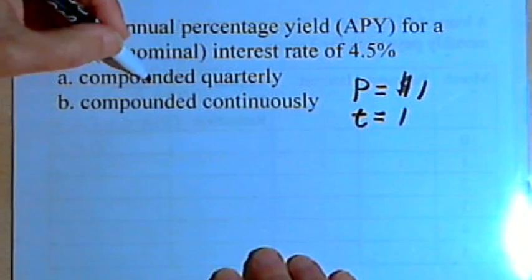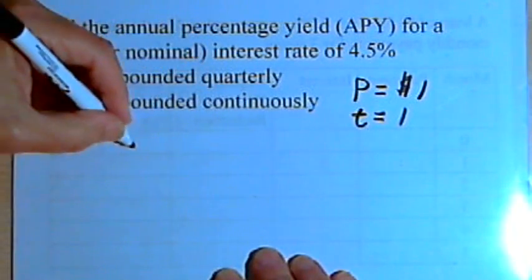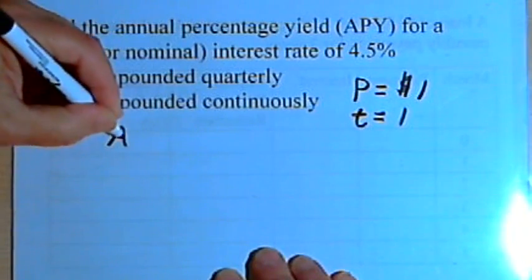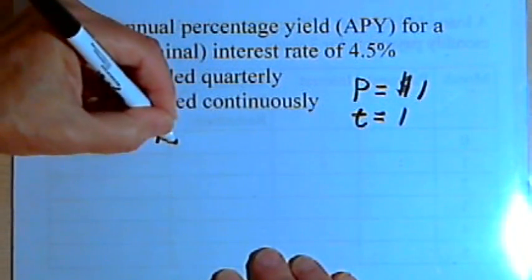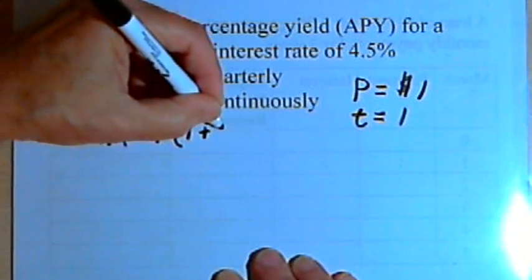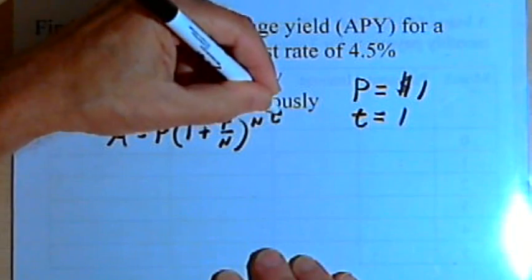Now let's work with the formula for compound interest. The formula says that A, the amount you get back, equals P times 1 plus r over n raised to the nt power.